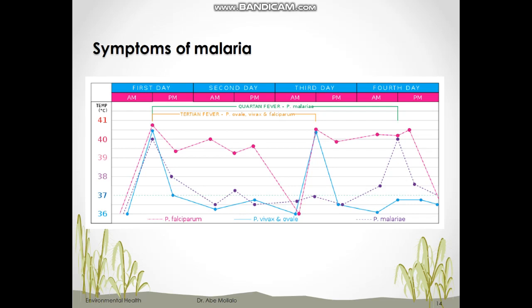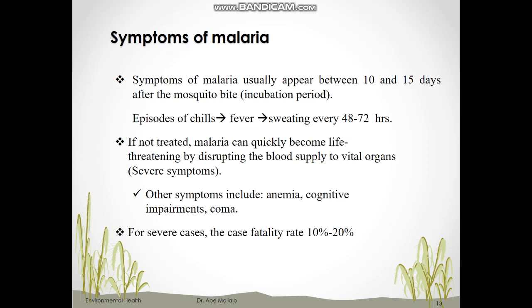If untreated, malaria can become a very dangerous disease, because the parasites rupture red blood cells in vital organs. Other symptoms of malaria include anemia from the destruction of red blood cells, cognitive disorder, impairments, or even coma. The case fatality rate for malaria is 10 to 20 percent — meaning among all infected patients, 10 to 20 percent will die, or roughly 1 to 2 out of every 10 infected persons.